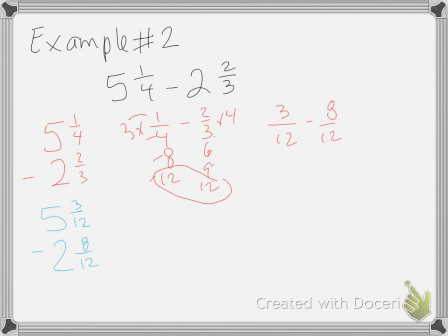And then we subtract. But 3 minus 8. 3 is too small. You cannot have 3 and then take away 8. So that means I need to regroup. I want to cross out my 5. It's going to turn into a 4. And that whole, I'm going to add it to my fraction.